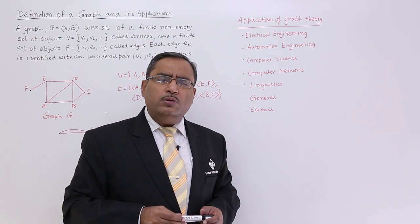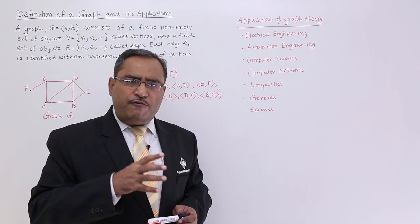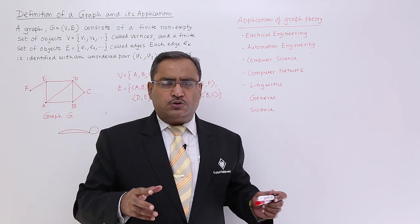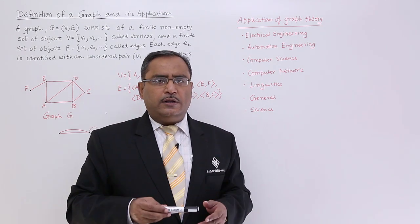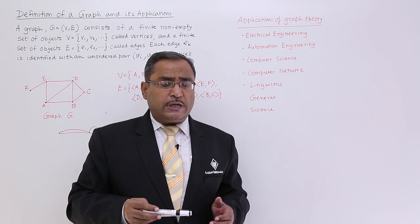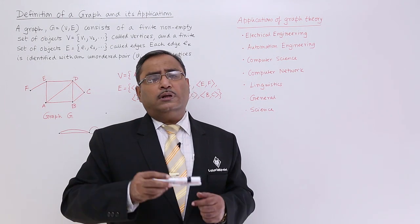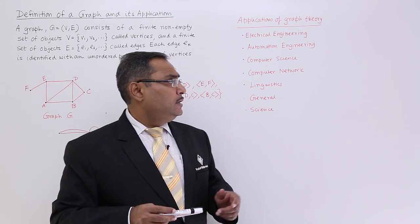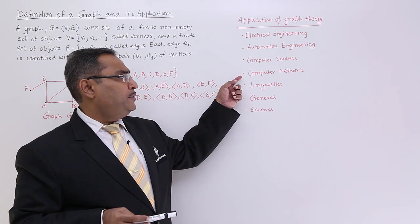In computer networks, what will be the maximum flow? That means from source to the target, what is the maximum flow of information that can be obtained? So there will be separate graph theory related applications. How the computers are connected? How the networking cables will be laid out? How the computer connections can be done? That will be handled by the graphs. That will be represented by the graphs in computer networking.